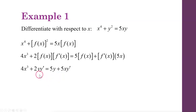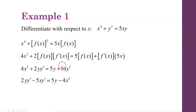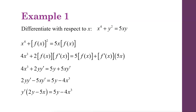Bring the two terms that have a y prime to the same side and move the 4x cubed to the other side, so all the y primes are together. That gives us 2y y prime minus 5xy prime equals negative 4x cubed plus 5y. Then we factor the y prime out and divide by 2y minus 5x on both sides, and we get an equation for dy/dx. So y prime equals that expression.